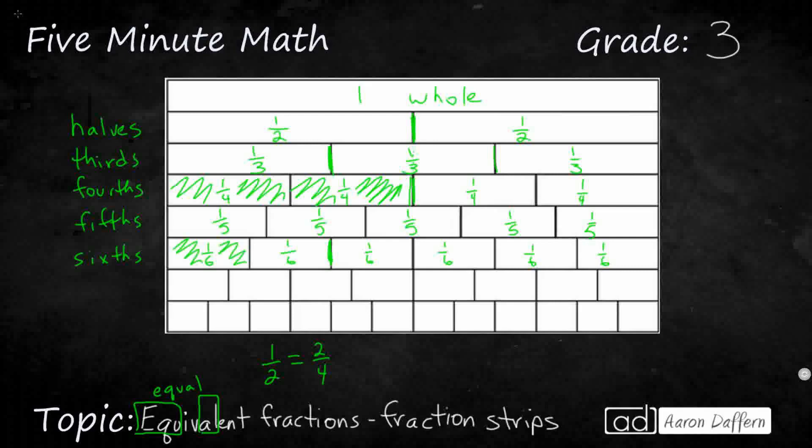I could say that two sixths, I'll put that up here, is the same as one third, because they go to that same distance. So two sixths equals one third. It makes sense. The two is double the one, and the six is double the three. I just took each of my thirds and cut it in half, and that's how you get your sixths.